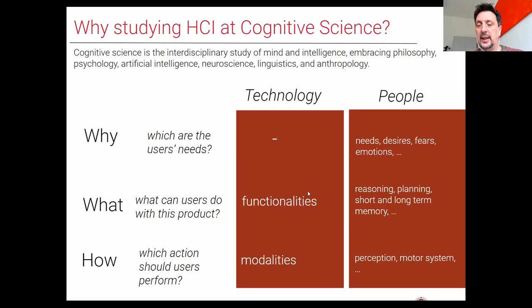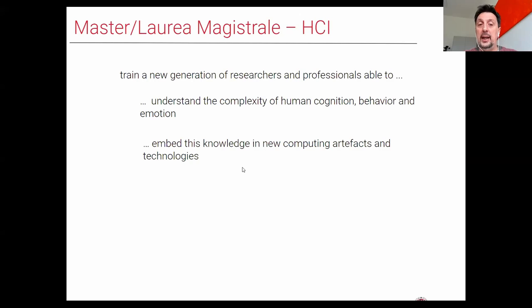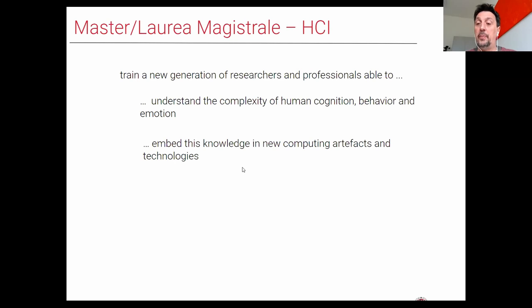All of this is part of cognitive science. Cognitive science, together with computer science and engineering, offers complementary points of view. Cognitive science gives you a rich vocabulary of concepts, methods, and techniques that will make you a better designer. With our master, we aim to train a new generation of professionals and researchers who understand the complexity of human cognition, behavior, and emotion, and embed that knowledge in the design of new technology — or a better approach to technology that already exists.